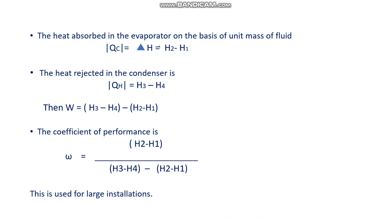The heat rejected in the condenser is qh = h3 − h4. From this, the work done is w = qh − qc = (h3 − h4) − (h2 − h1). The coefficient of performance is COP = ω = qc / w = (h2 − h1) / [(h3 − h4) − (h2 − h1)].